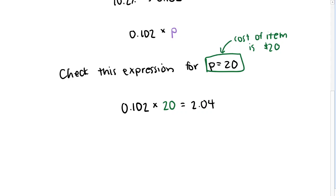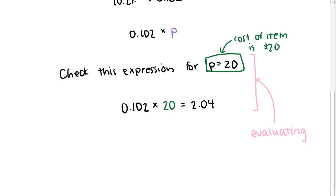When we plug a value in for our variable in an expression, this is called evaluating. It just means to substitute a value for the variable and compute the result. We evaluated our expression at p equals 20, which meant finding the sales tax on a $20 item.